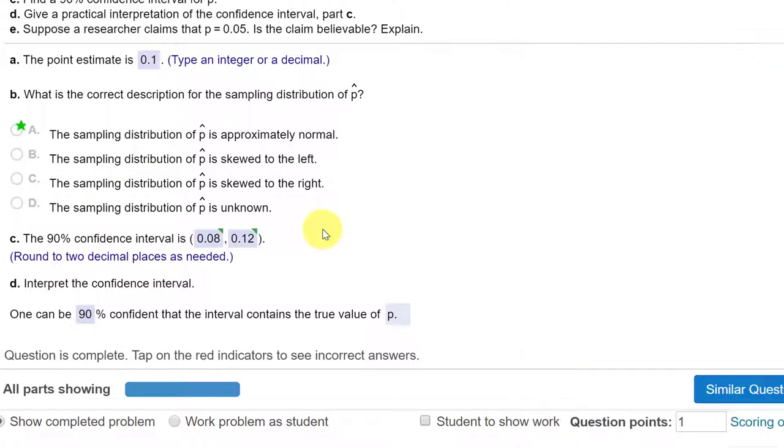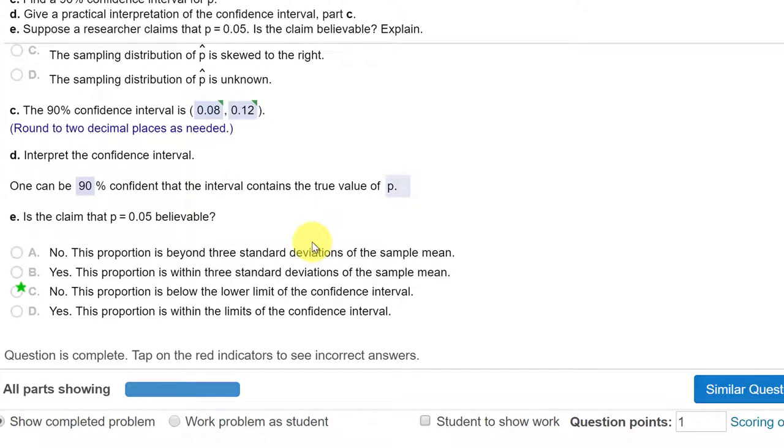The next thing is to interpret the confidence interval and that is the same. We can be 90% confident the interval contains a true value of the proportion P, the population proportion.